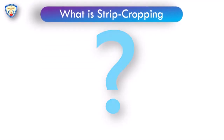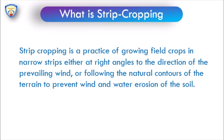Strip cropping is a practice of growing field crops in narrow strips either at right angle to the direction of the prevailing wind or following the natural contours of the terrain, to prevent wind and water erosion.